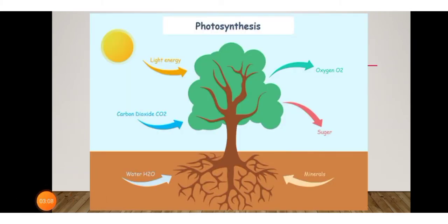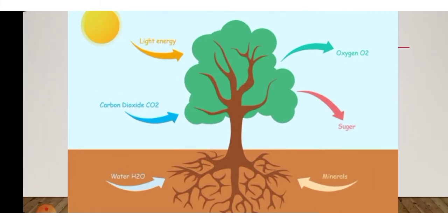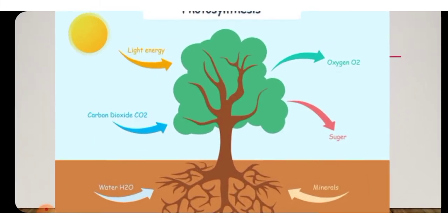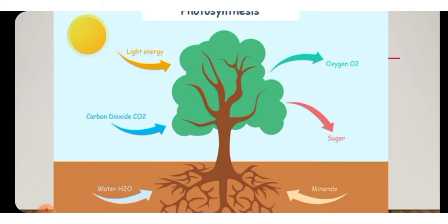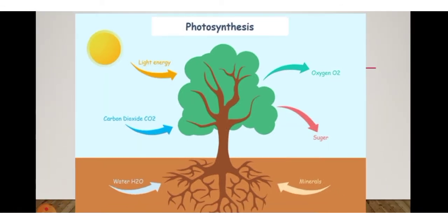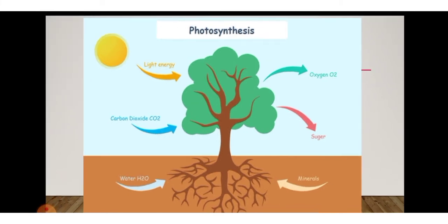Plants are the only organisms that can prepare food for themselves by using water, carbon dioxide, and minerals. The plant takes light energy from the sun, carbon dioxide from the atmosphere, water and minerals from the soil, prepares sugar, and releases oxygen through the photosynthesis process.